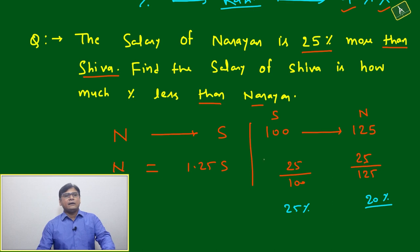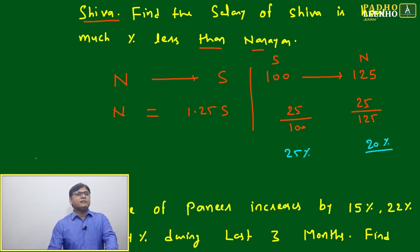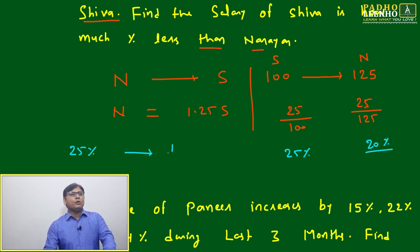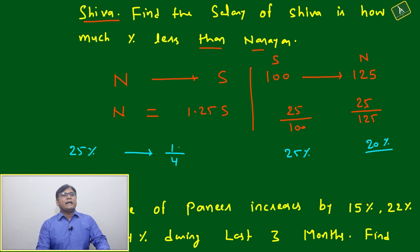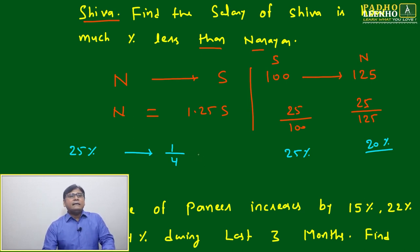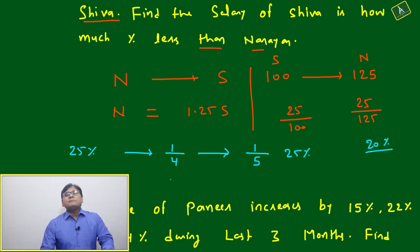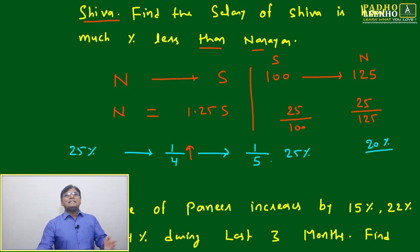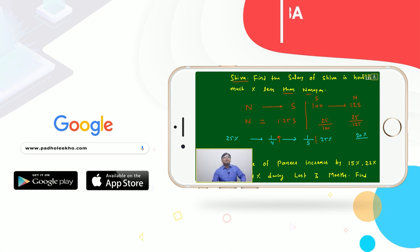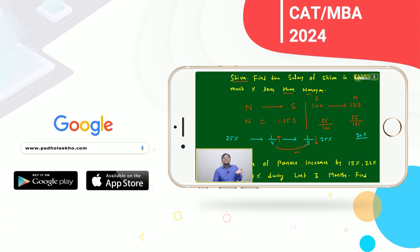Alternatively, using the fraction method: 25% = 1/4. If Narayan's salary is 1/4 more than Shiva's, then Shiva's salary will be 1/5 less than Narayan's. This is the RD technique — when a value increases by 1/4, the reverse decrease is 1/5, which equals 20%.